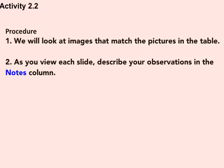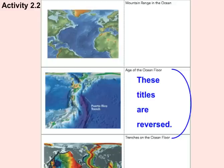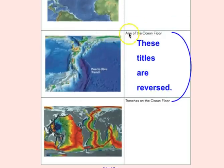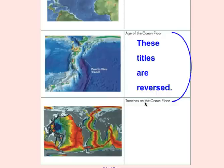Here are the procedures: we're going to look at images that match pictures in the table on page 25. As you view each slide, describe your observations in the notes column. First, we need to fix a mistake in the book. The two middle pictures have their titles swapped — 'age of the ocean floor' and 'trenches on the ocean floor' should be reversed. Cross them off and rewrite them correctly, since this error was never fixed in the book.